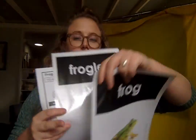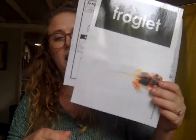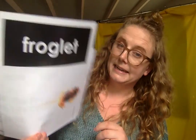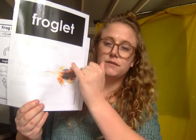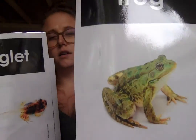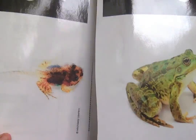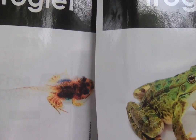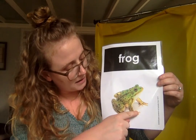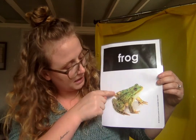The end of our life cycle: after the froglet has grown his back legs and his front legs, he becomes a frog. Can you tell me the difference between these two? He doesn't have a tail anymore. But he still has his front legs and he has his back legs back here.